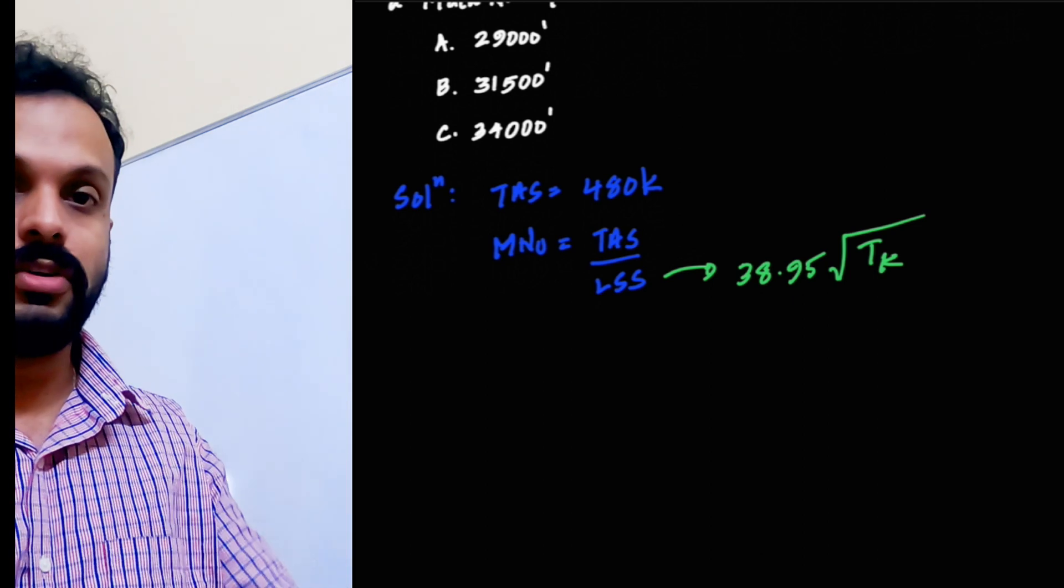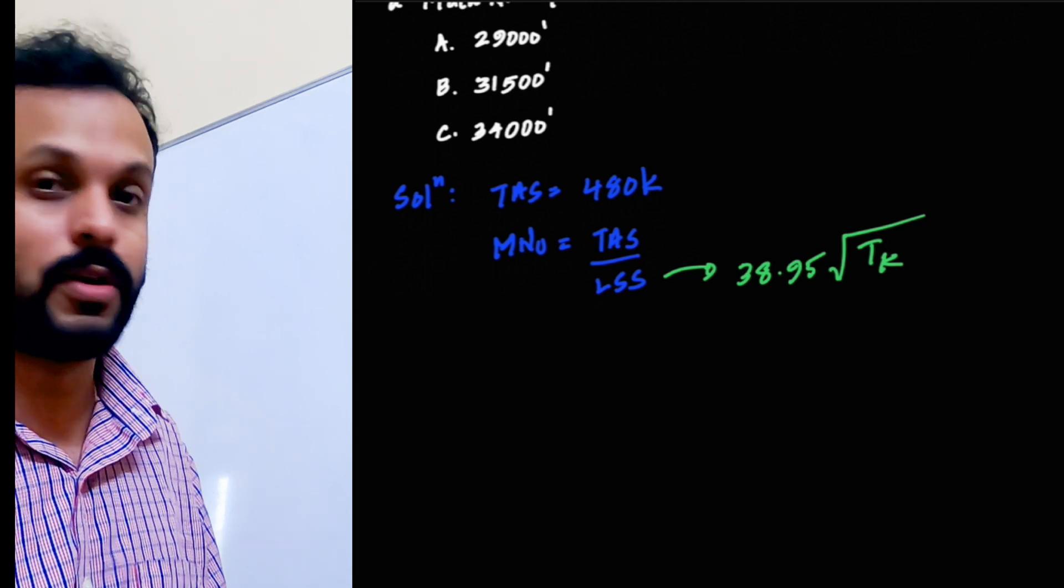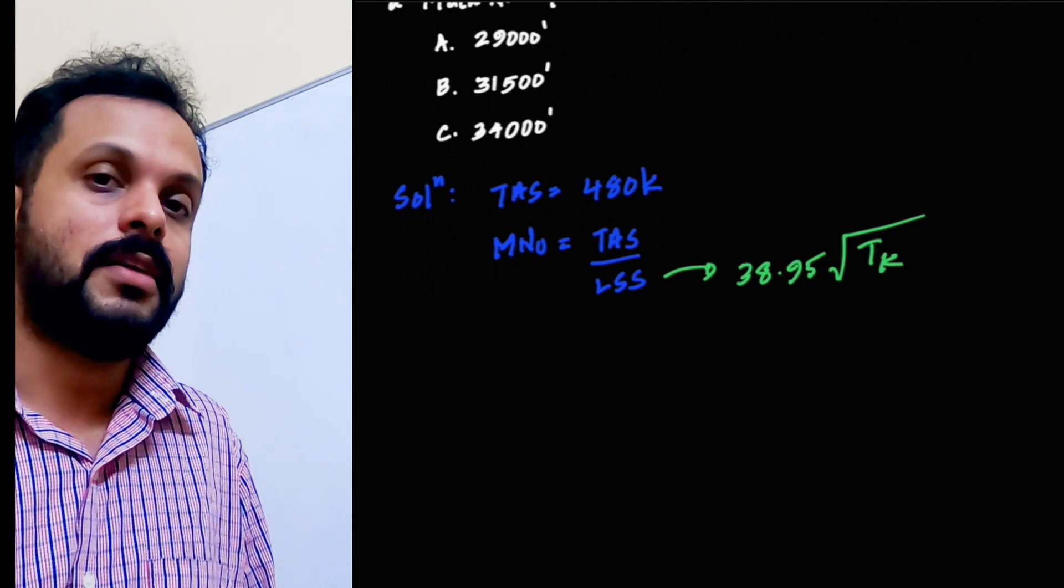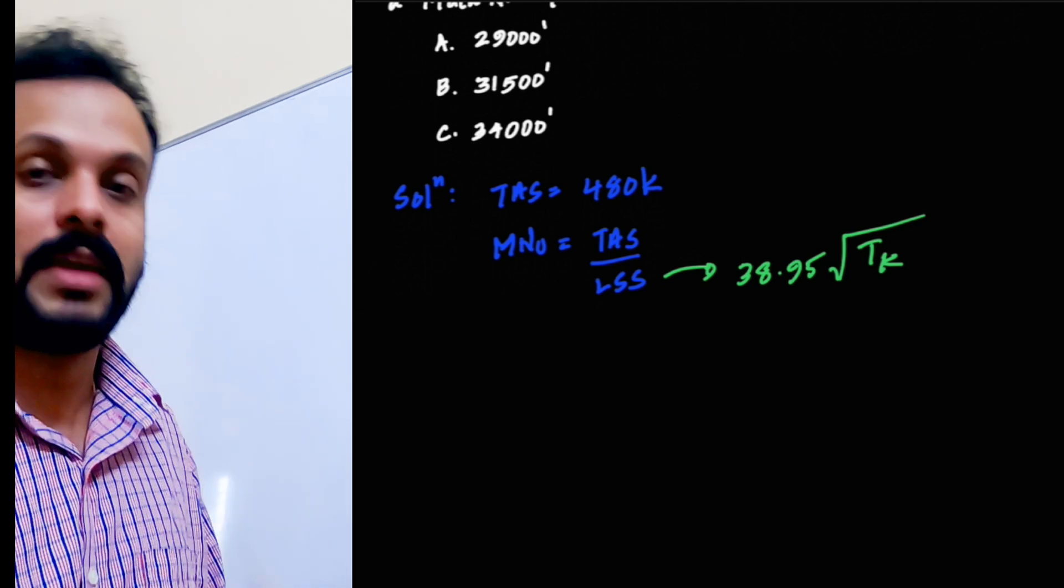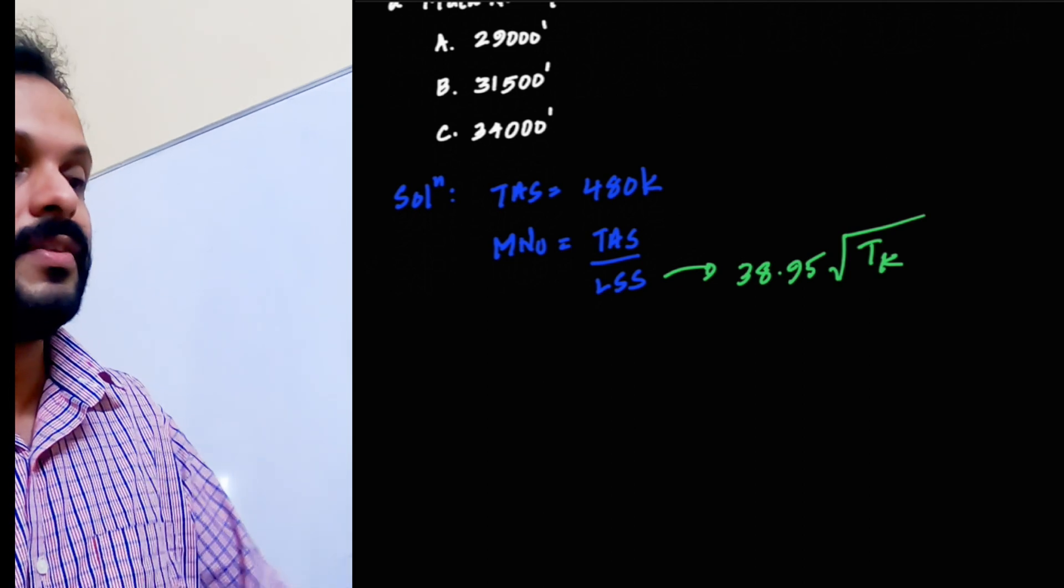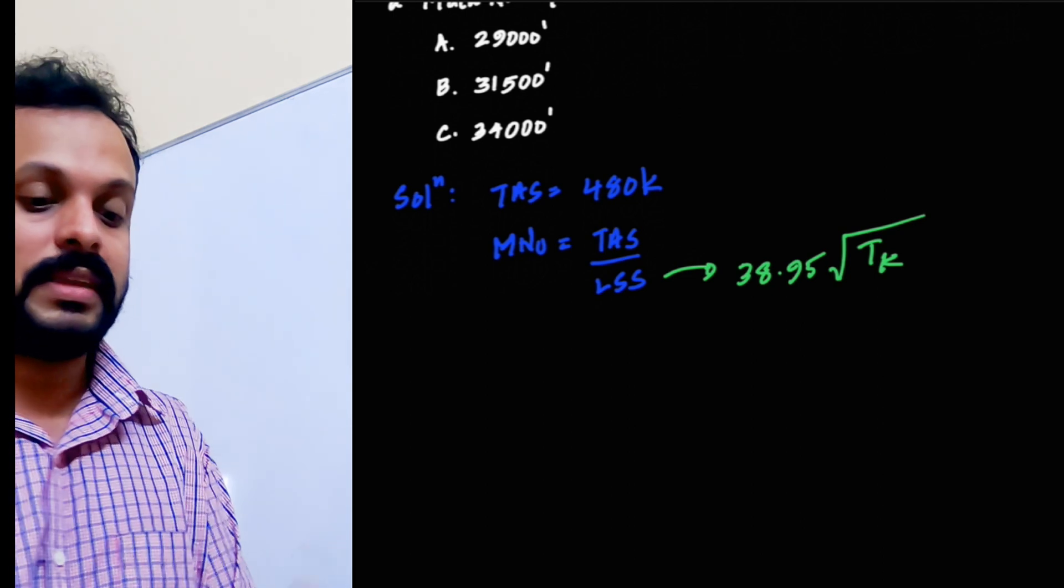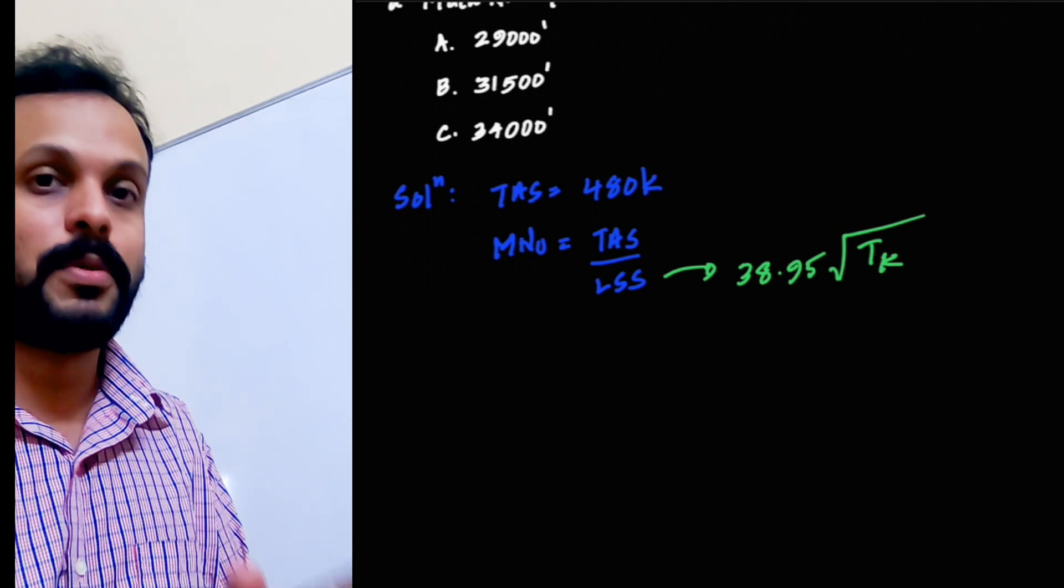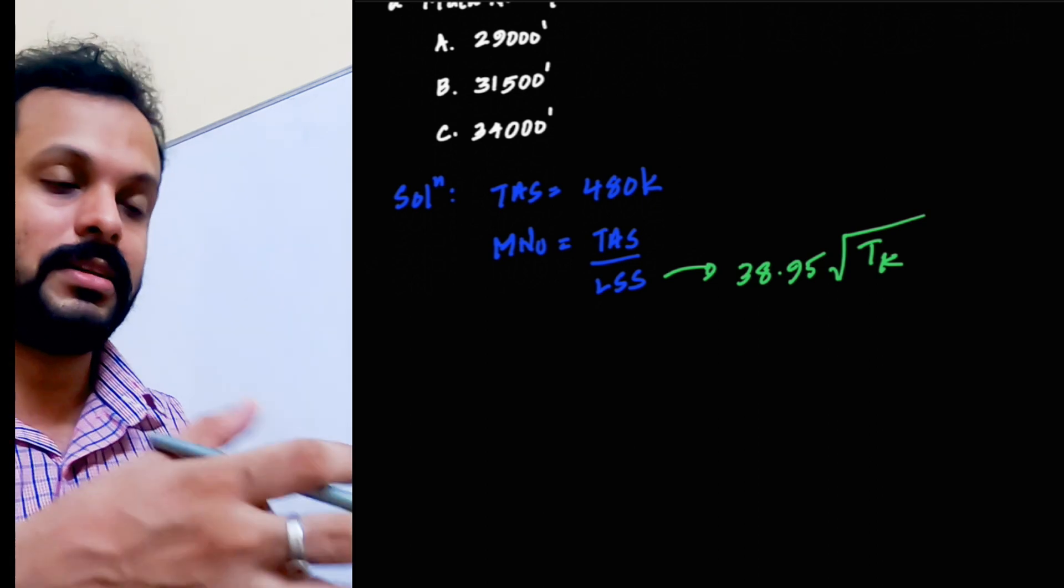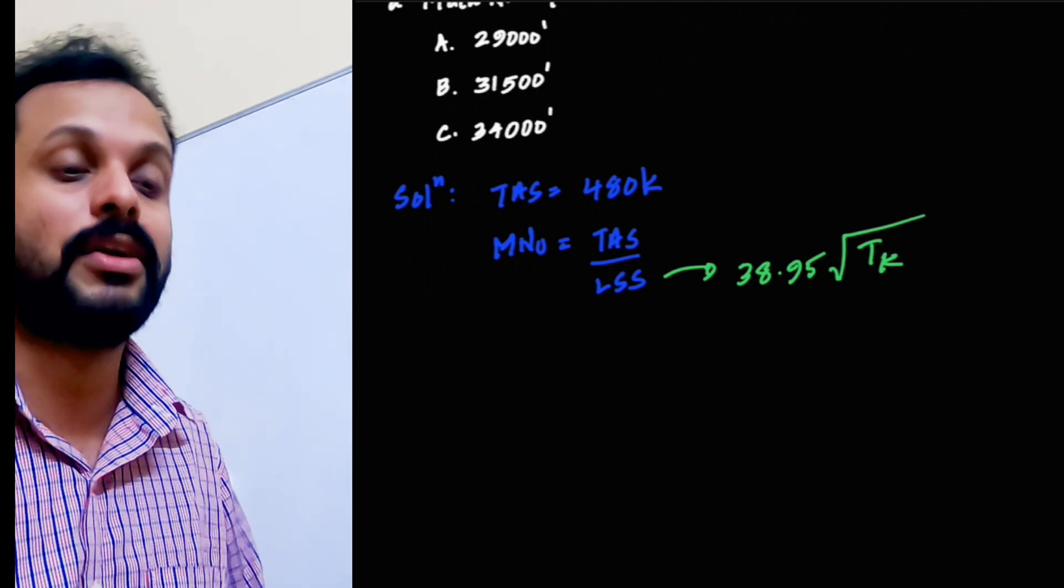For that reason, at different altitudes under ISA, because of lapse rate up to 36,090 feet, we know that there is a lapse rate of 1.98 degrees Celsius per thousand feet. And for that reason, every given altitude you have a unique temperature under ISA system. Since your speed of sound depends upon this temperature in Kelvin, it is more appropriately called as a local speed of sound because it is locally correct.